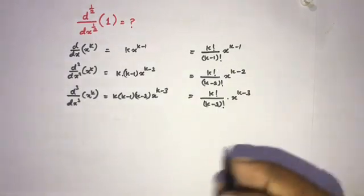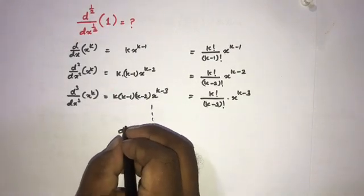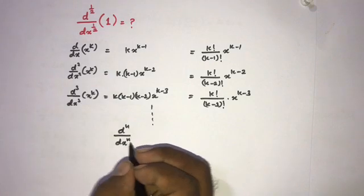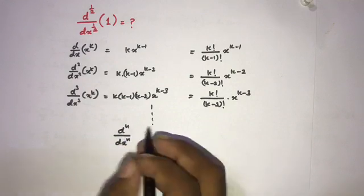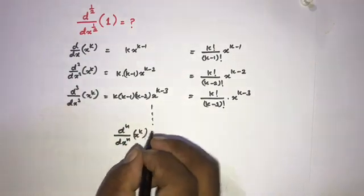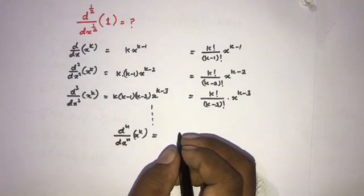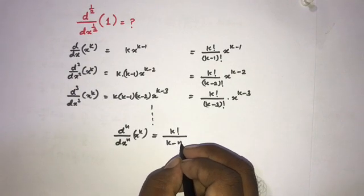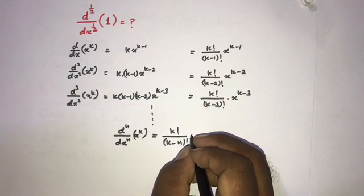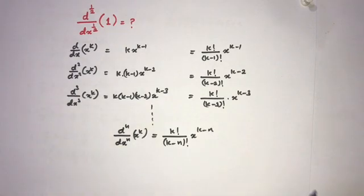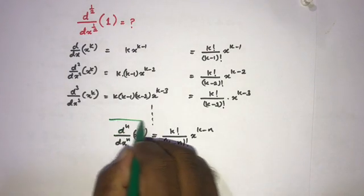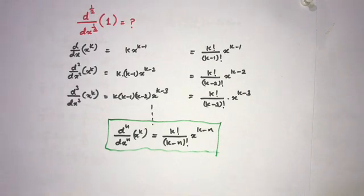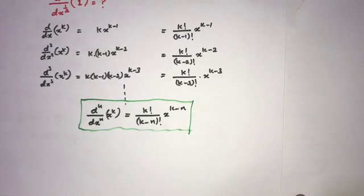We can see a pattern. The nth derivative of x to the k, for any positive integer n, is equal to k factorial over k minus n factorial times x to the k minus n. We generally use this equation for positive integers, but we can convert this formula to allow fractional values.